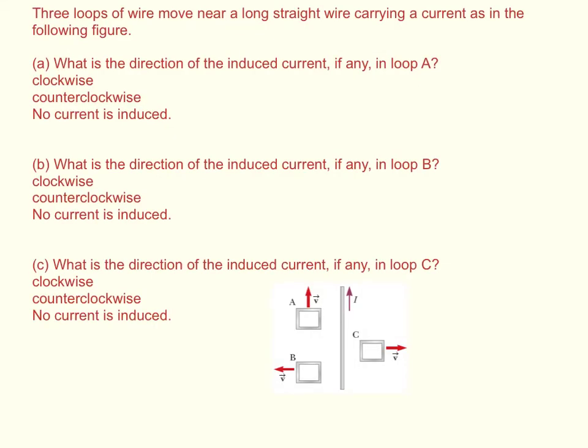Three loops of wire move near a long straight wire carrying a current as in the following figure. What is the direction of the induced current, if any, in loop A? What is the direction of the induced current, if any, in loop B? And what is the direction of the induced current, if any, in loop C?